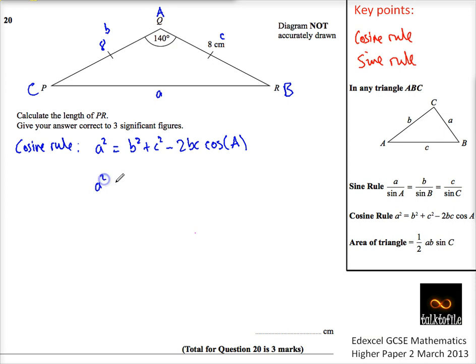So I'm going to write it out again and put my numbers in. A squared equals 8 squared plus 8 squared minus 2 lots of 8 times 8, all multiplied by the cosine of 140.